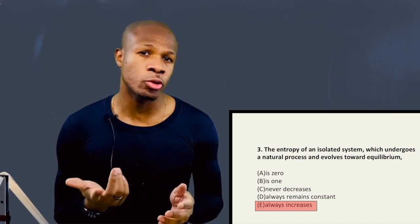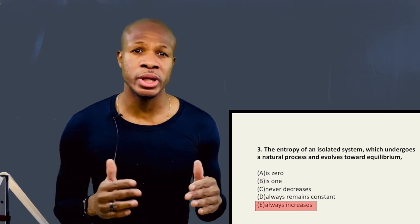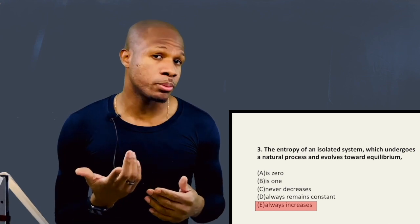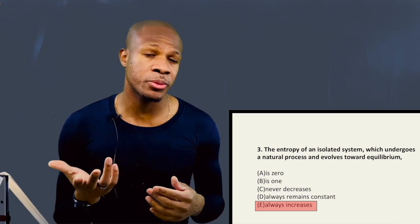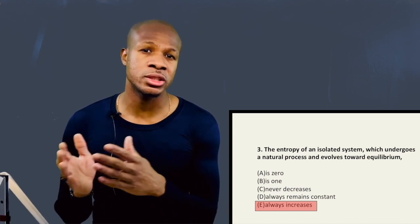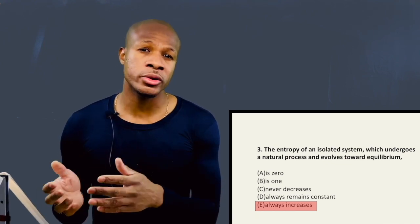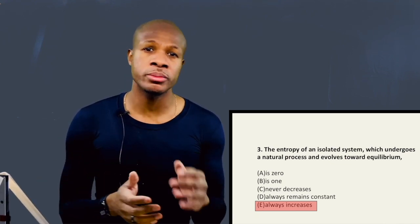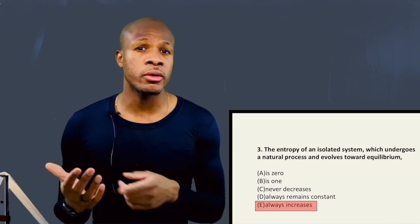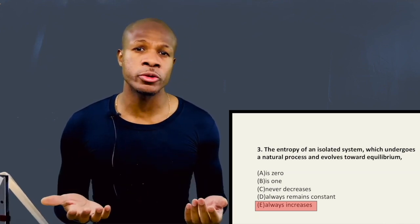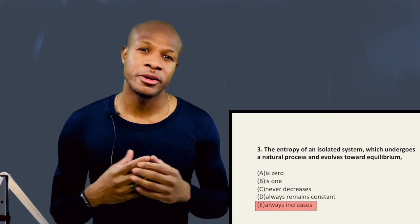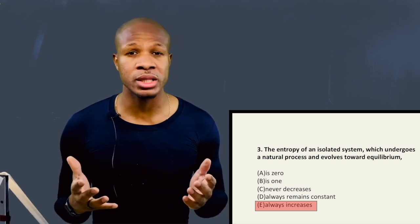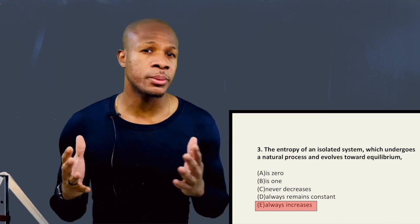What happens to entropy at equilibrium? It stays constant — change in entropy at equilibrium is zero. By the way, you should know that for the Carnot engine, the reason why the Carnot engine is the most efficient type of engine is that the change in entropy is equal to zero. Why? Because the Carnot engine operates at equilibrium through the entire cycle. So if you remain at equilibrium, the change in entropy will be equal to zero. If you stray away from equilibrium, the entropy will increase. That is basically a law of nature. You can apply that to chemistry, biology, or any other science.